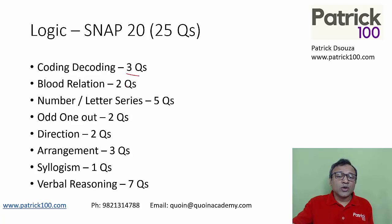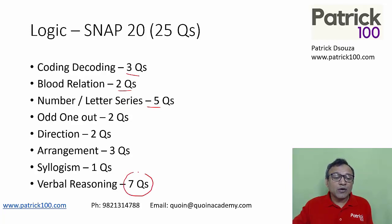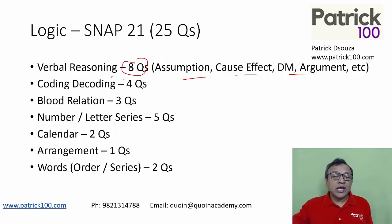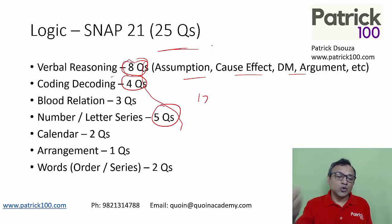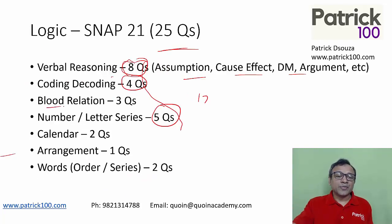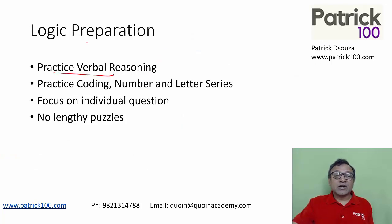For Logic, look at coding-decoding, blood relations, and number series — there are no group questions, it's all individual questions. The key here is the huge weightage for verbal reasoning questions — around eight questions from syllogism and assumption/cause-effect/decision-making. So verbal reasoning becomes a very important part of the examination. If you're looking at what to prepare, focus on three areas: coding-decoding, verbal reasoning, and number/letter series. These three carry 17 marks out of 25 questions — a huge weightage. Also cover calendars and arrangements, and be comfortable with blood relations, as two to three questions come from that topic in SNAP. Practice verbal reasoning because approximately eight questions — one third of the logic section — come from it.